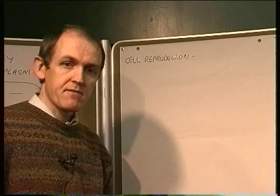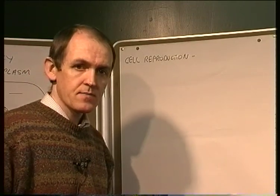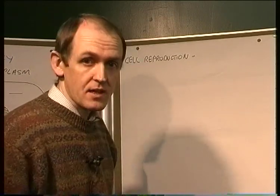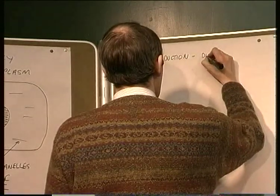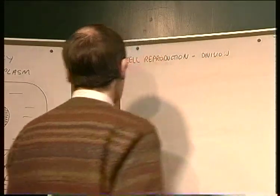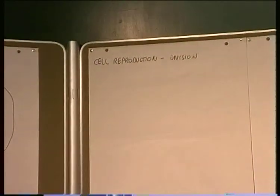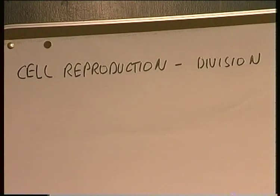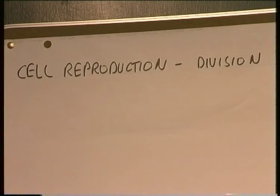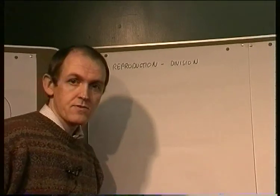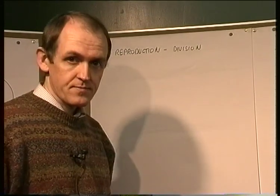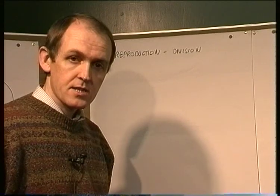Cells reproduce by dividing — one cell will divide into two. So cell reproduction occurs by the process of cell division. And there are two forms of cell division: the first is referred to as mitosis, and the second is referred to as meiosis.